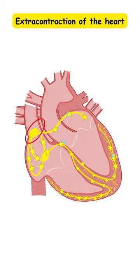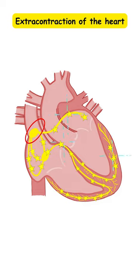These extra contractions are called premature beats, because they appear earlier than expected.